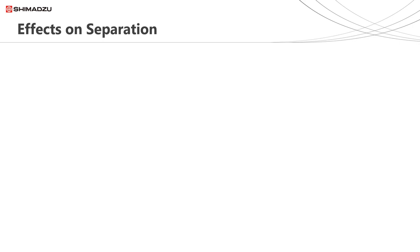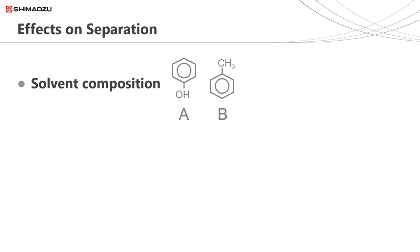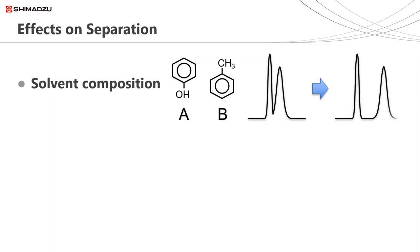Also during the second webinar we discussed what affects the separation. For reverse phase chromatography, we looked at solvent composition — how for two analytes, by reducing the strength of the mobile phase, that is having a lower percentage of methanol to water in our mobile phase, we could increase the separation between these two analytes.